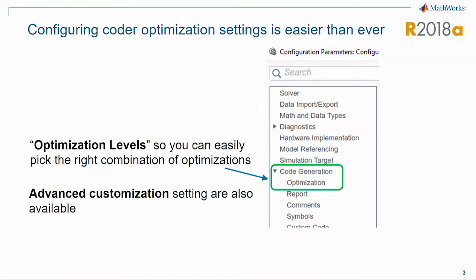As our product matures, we are adding an increasing number of features. In one sense we can say that we are giving more power to the user, but another way of looking at it is that by complicating the product, we are actually making it harder for them to find those optimizations.